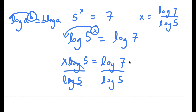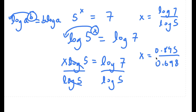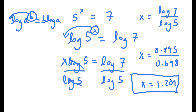Log 7 is approximately equal to 0.845. So log 7 over log 5 is approximately equal to 1.209. So this is my answer.